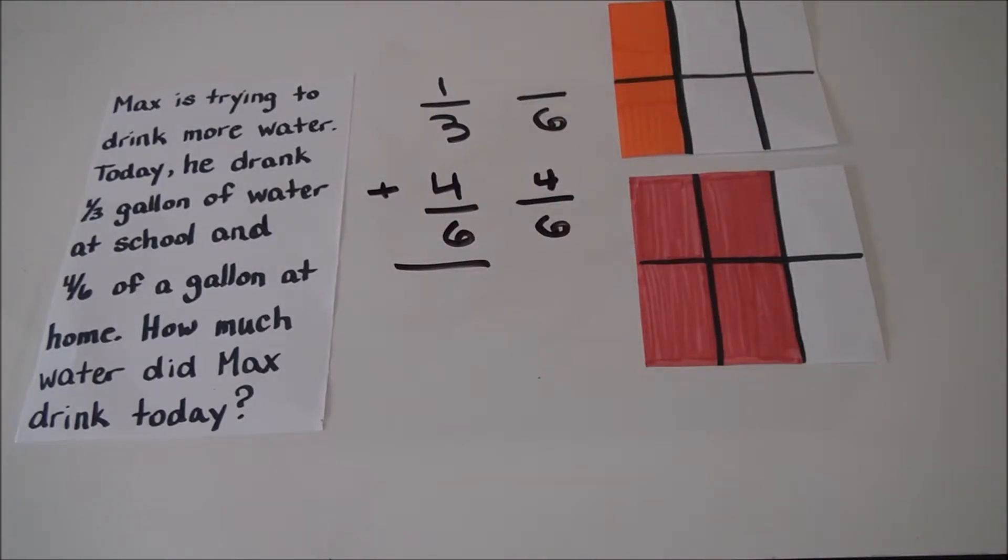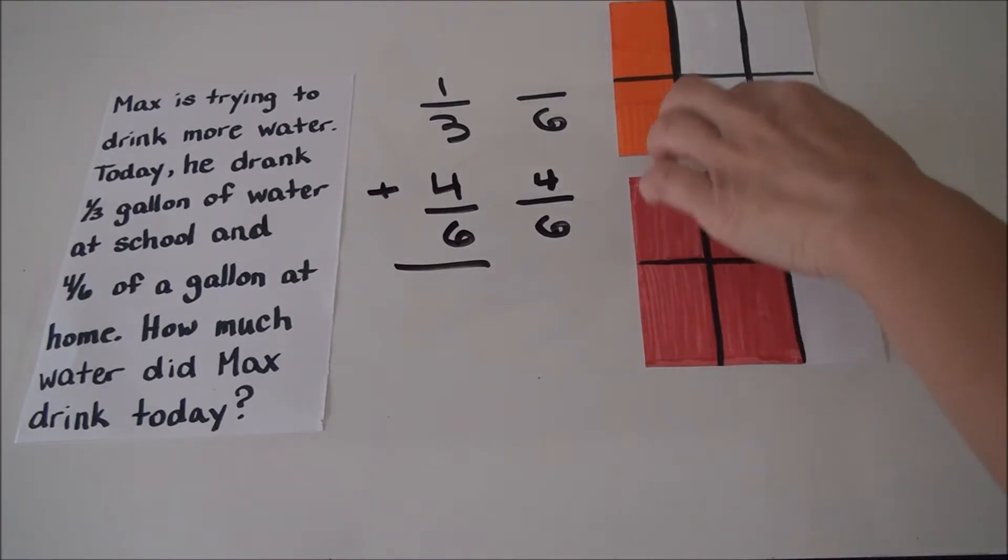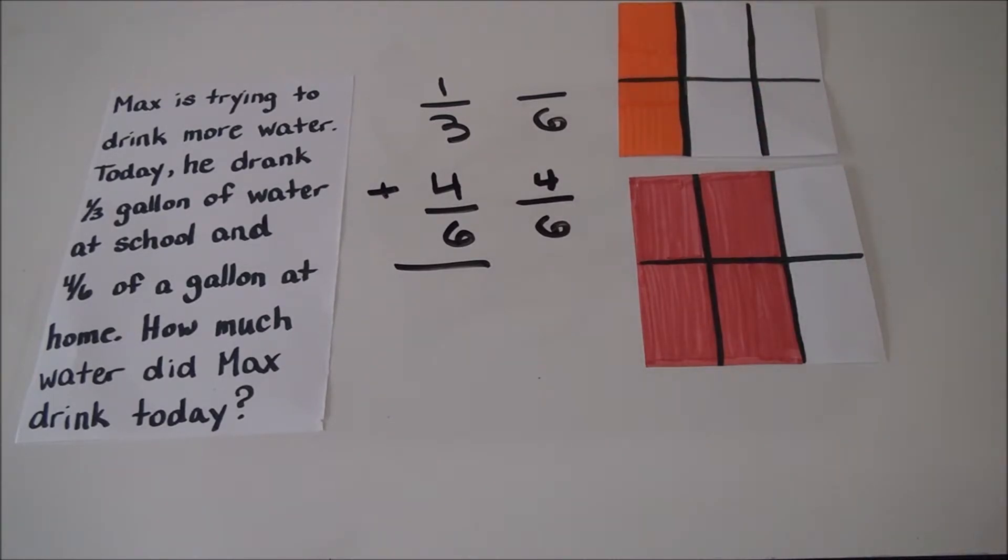Wait a second. Look what just happened here to the part that I shaded. Now there are two parts shaded. I didn't color anything extra, so what happened? Well, when I doubled the total number of parts, it ended up doubling the pieces that were shaded.